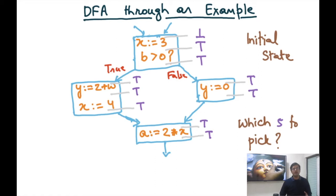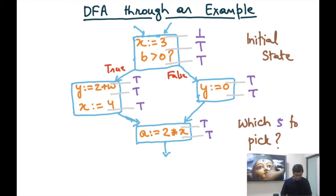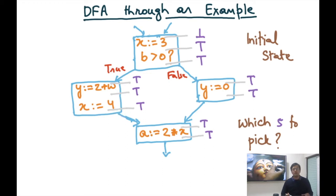The algorithm proceeds by picking some statement S that does not follow one of the rules 1 to 8. For example, let's pick the statement x is colon-equal to 4. Is the in and out of the statement following the rule? The in is top and the out is also top. This is actually following the rule because one of the rules says that if the in is top, then the out should also be top for a single statement.